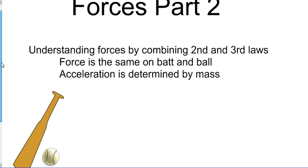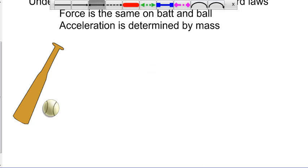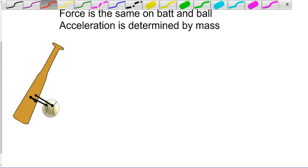As a quick example, if we have a baseball player swinging the bat at the ball, the force applied by the bat to the ball is the same as the force that the ball applies to the bat. We know this because of Newton's third law, which says that for every action there is an equal and opposite reaction.